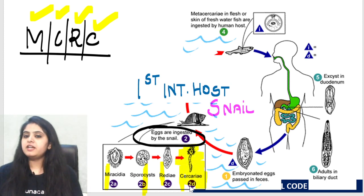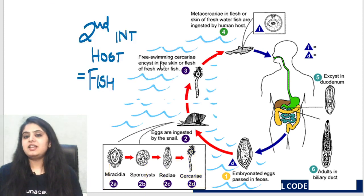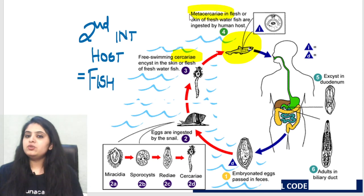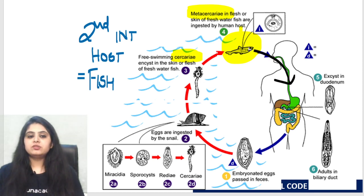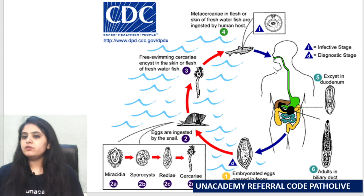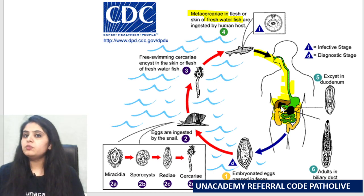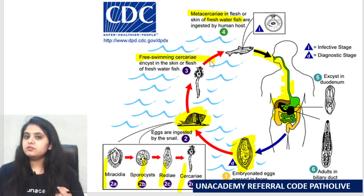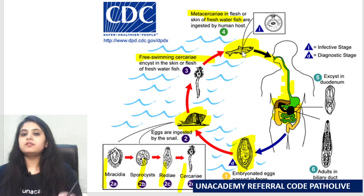The cercaria larva comes out of the snail and goes to the second intermediate host — the fish. In the fish, cercaria develops into metacercaria, and the metacercaria larva is what you ingest — completing the cycle. Recap: three hosts — man, snail, fish. From the fish the metacercaria larva is ingested, goes to the duodenum, ascends the biliary tract, adult worms form, embryonated eggs are passed, ingested by the snail, MCRC development occurs, cercaria comes out, goes to the fish, forms metacercaria, and back to the cycle.